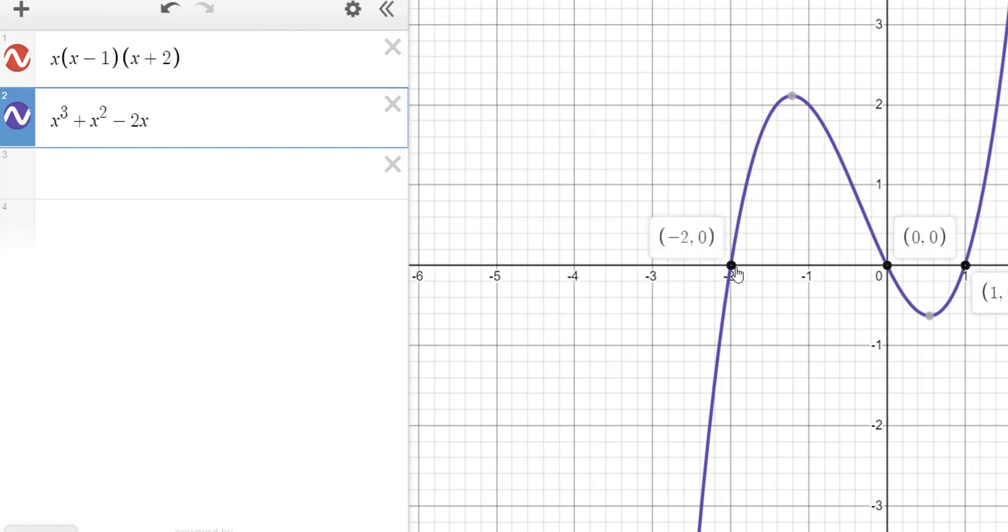And then, of course, over here, I had a zero of negative two. So all of those things match up with both my factored form and the final version of the standard form. And I know they're exactly the same.